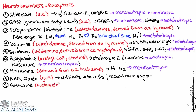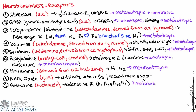Adenosine is a naturally occurring nucleoside that binds to adenosine receptors. Its subtypes are A1, A2A, A2B, and A3. Its mechanism is metabotropic.